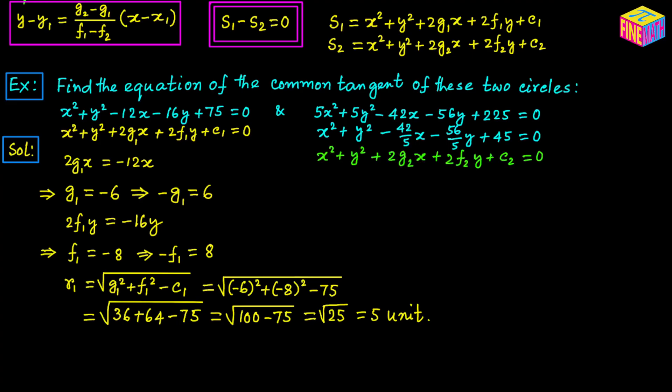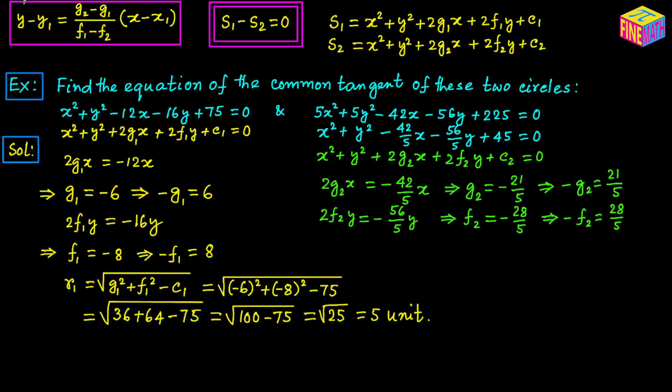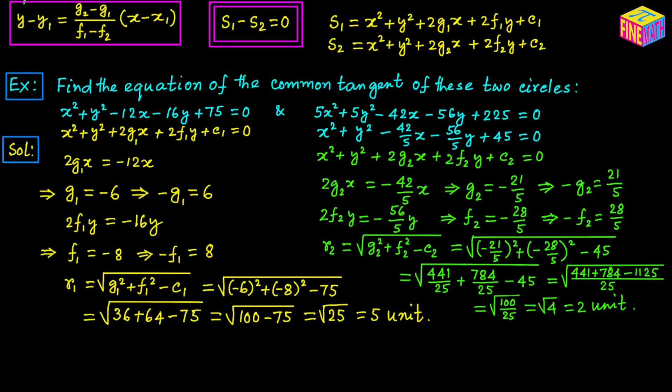Let's find G sub 2 and F sub 2. From the normalized equation, 2 G sub 2 times X equals negative 42 over 5 times X, so G sub 2 equals negative 21 over 5 and negative G sub 2 equals positive 21 over 5. Similarly, 2 F sub 2 times Y equals negative 56 over 5 times Y, giving F sub 2 equals negative 28 over 5 and negative F sub 2 equals positive 28 over 5. Calculating the radius of the second circle using the formula, it turns out to be 2 units.